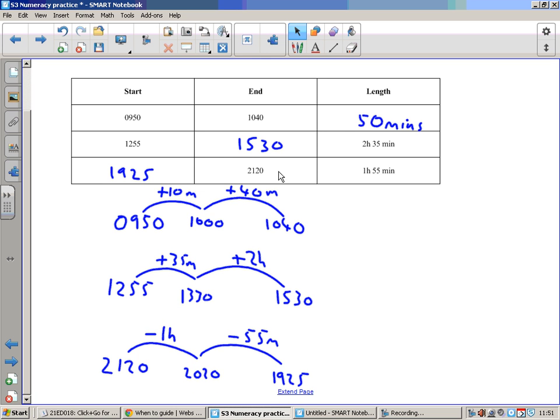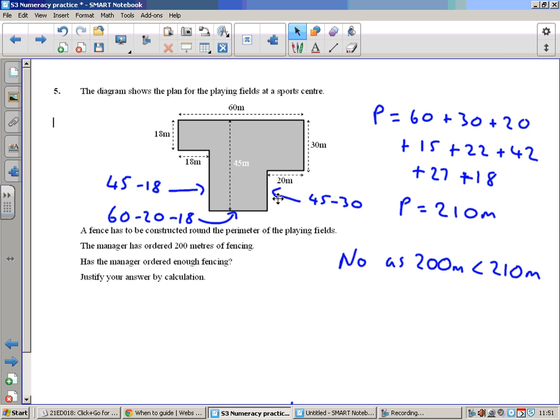This one we know when it ends, we know how long it lasted, we need to count backwards. So remove an hour to get to 20:20, then come back 55 minutes, or we could come back an hour then add on 5 minutes. That would be fine as well if you do it that way.